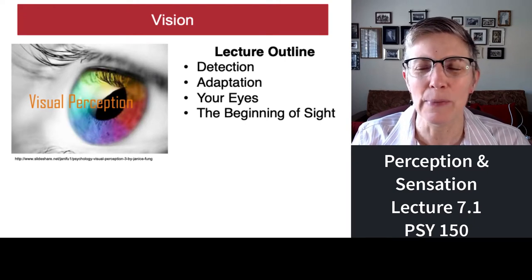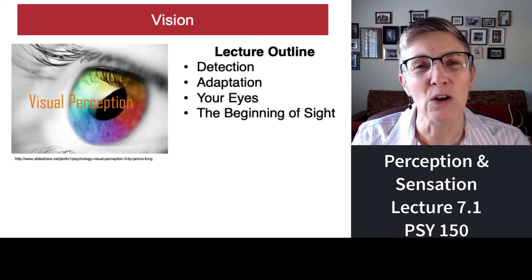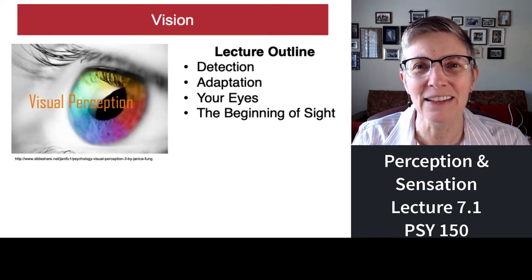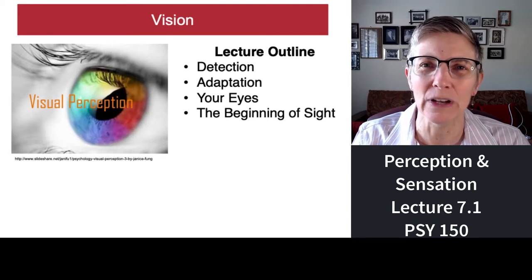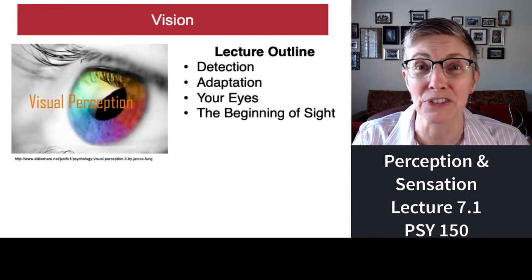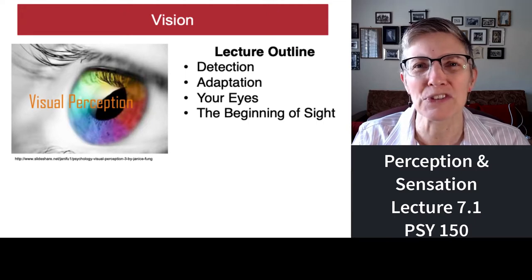We'll talk about how you detect things, how your visual system adapts, the different parts of your eyes and how they produce different kinds of blindness, and then we'll talk about color perception.